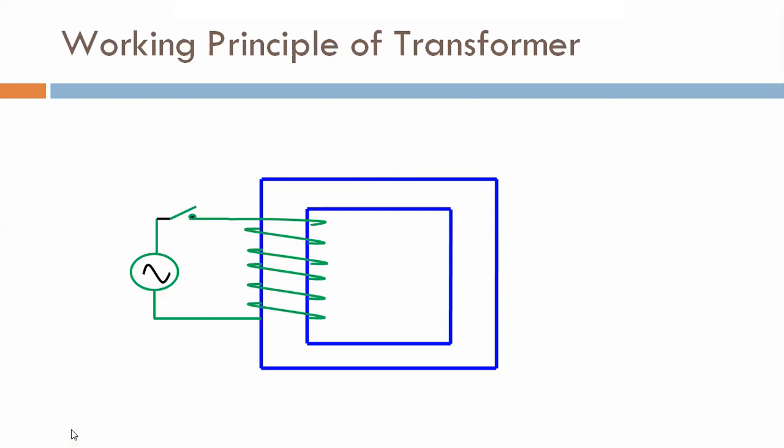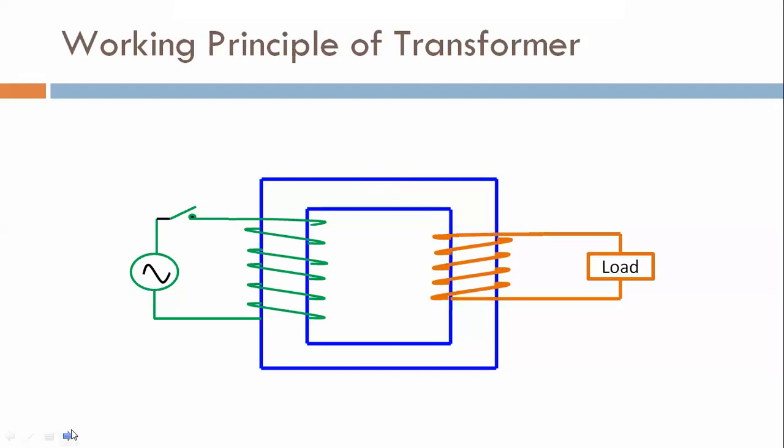A transformer consists of two windings — one is called the primary winding, which is connected with the source, and another is the secondary winding, which is connected with the load. We are saying here that where supply is given, it will become the primary. This is the secondary, connected with the load.